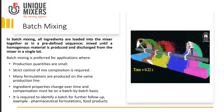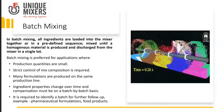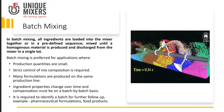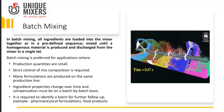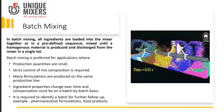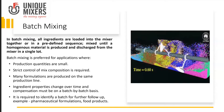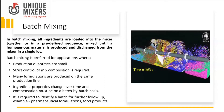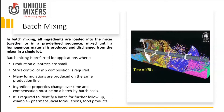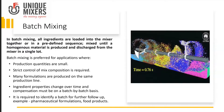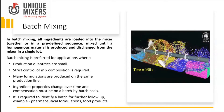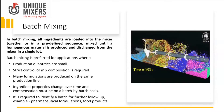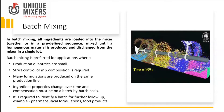Where do we use batch mixing? When production quantities are small, batch mixing is preferred. Strict control of mix composition is required. Many formulations are to be produced on the same production line. Ingredient properties change over time and compensation must be made on a batch-to-batch basis, and where it is required to identify a batch for further follow-up, such as pharmaceutical applications or food products.